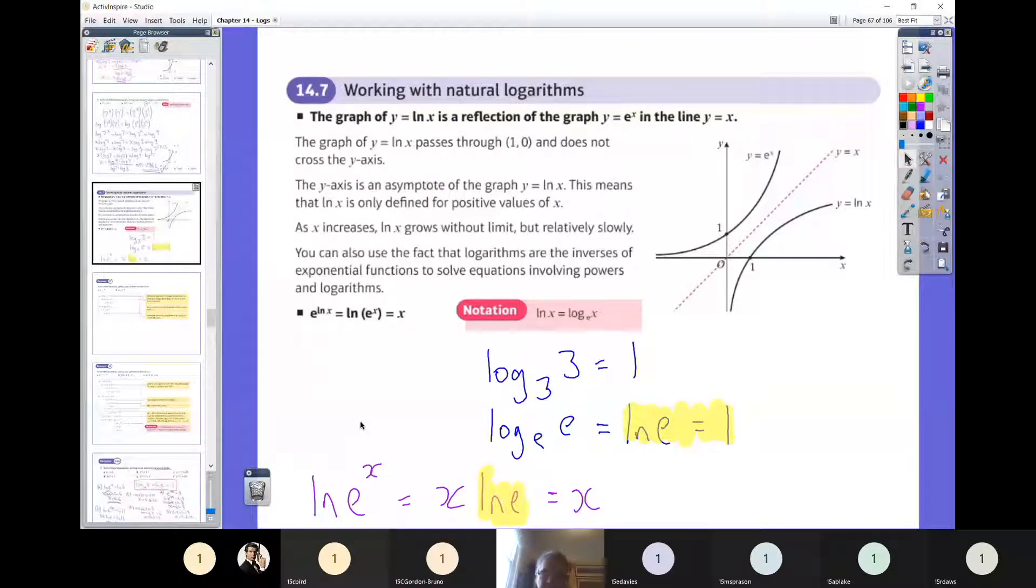OK, so we're moving on to the next bit and it is ln, natural logarithms, which is abbreviated to LN on your calculator and on paper. So just try and see where your ln button is on your calculator. So where is it?